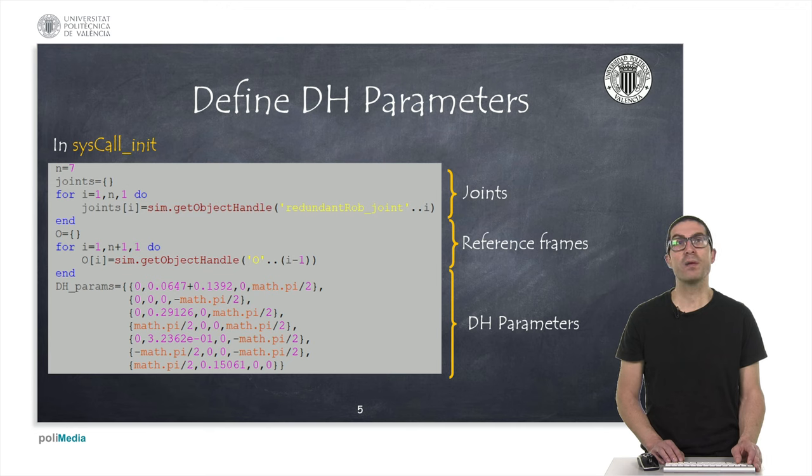Also, we will create a Lua table with the Denavit-Hartenberg parameters that we get in our previous step. This table contains 7 elements, with each of them with another table of 4 elements related with the Denavit-Hartenberg parameters of each joint.